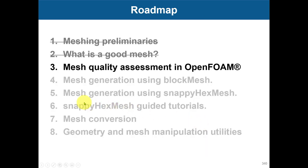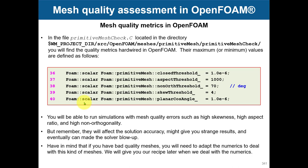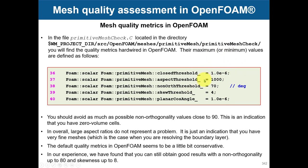Now let's talk about mesh quality assessment in OpenFOAM. The quality thresholds are hardwired in the library. You have aspect ratio, non-orthogonality, and skewness. When you run the utility checkMesh and values exceed these thresholds, checkMesh will give you a warning or an error. This doesn't mean you cannot run the simulation — it is just telling you to be careful that you have large values that might affect the quality of your solution.